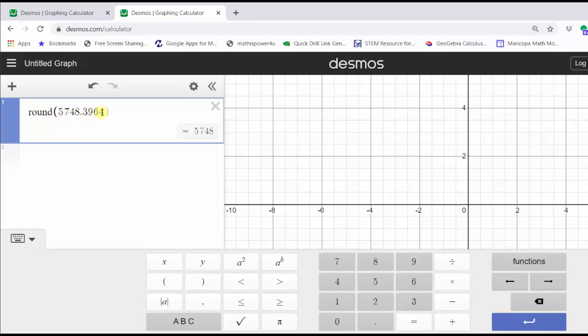Now by default, if we stop here, the number rounds to the ones place value, which we can see on the right is 5748. The other option is to enter comma zero, indicating we want the number rounded to zero decimal places, or the ones place value.